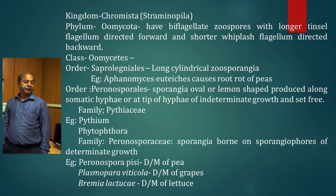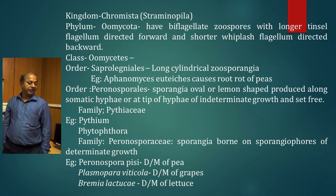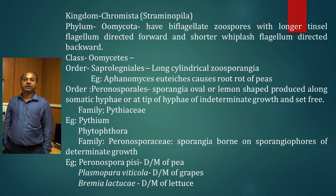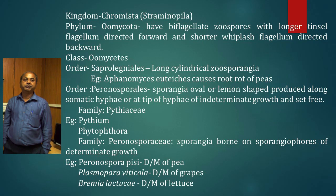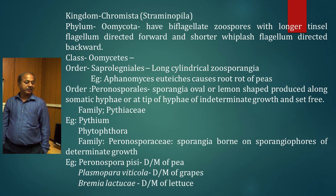In order Peronosporales, the sporangia are oval or lemon-shaped, produced along somatic hyphae or at the tip of hyphae of indeterminate growth. The family is Pythiaceae. Under Pythiaceae, you have the genera Pythium and Phytophthora. Pythium causes damping-off disease in seedlings, and Phytophthora — the classical pathogen — causes late blight of potato, caused by Phytophthora infestans.